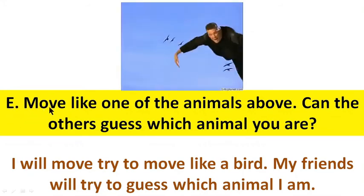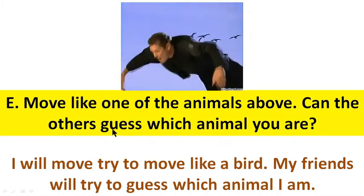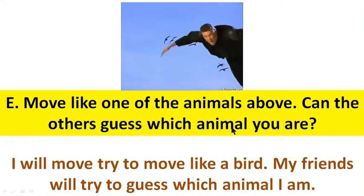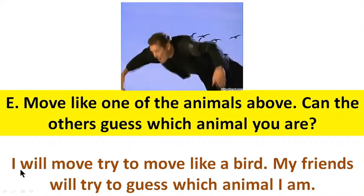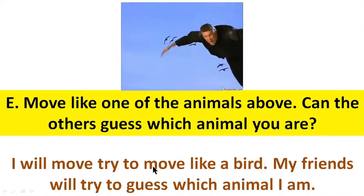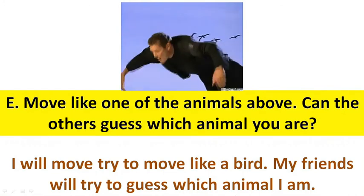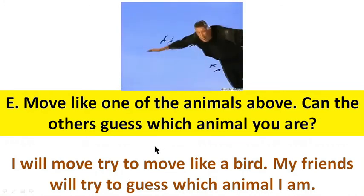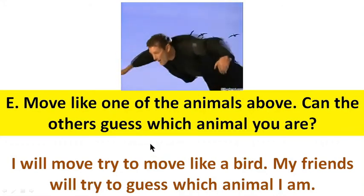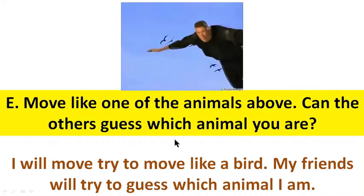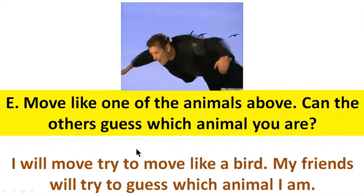Question number E. Move like one of the animals above. Can the other guess which animal you are? That means we will act and move. Try to move like a bird — your friends will guess which animal you are. I will act like a bird, then like a cat, then like a tiger.